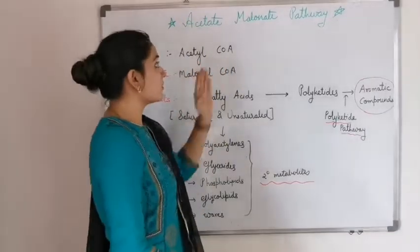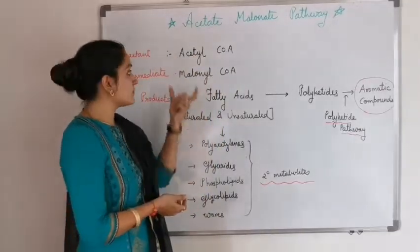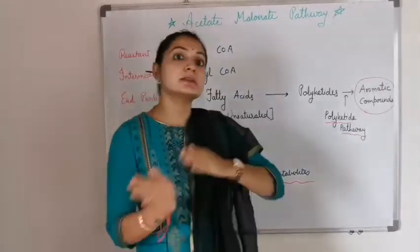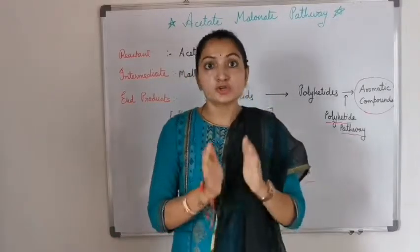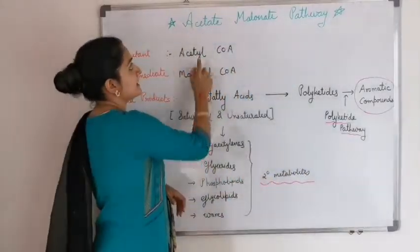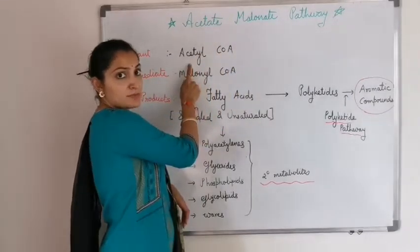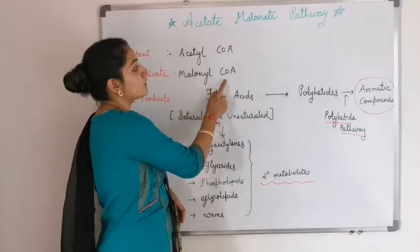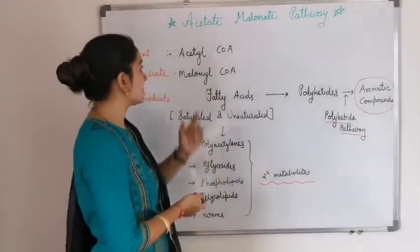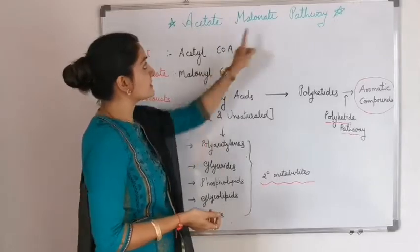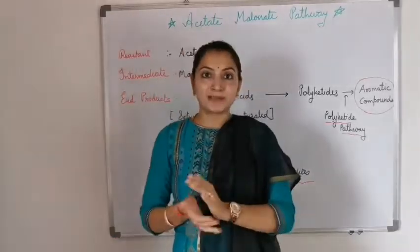From acetyl coenzyme A, the acetate-malonate pathway produces malonyl coenzyme A as an intermediate. The pathway is named acetate-malonate: 'acetate' comes from acetyl coenzyme A as the reactant, and 'malonate' comes from malonyl coenzyme A formed as an intermediate.